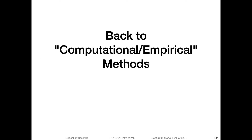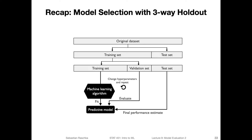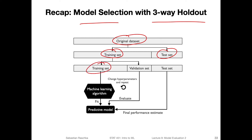Back to the computational empirical methods. Just a recap, setting up the stage for explaining nested cross-validation — recapping some aspects we talked about earlier. One method we talked about for model selection was the three-way holdout method. Here's a recap using a slightly different figure. What we do is we split our original dataset into a training set and a test set, and then we split the training set further into a smaller training set and a validation set. We use the training set together with the machine learning algorithm and a specific hyper-parameter set and fit it.